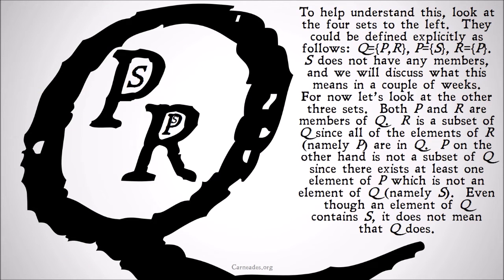To help understand this, look at the four sets to the left, graphically depicted for people that need a different way of understanding this. They can be defined explicitly as follows: Q = {P, R}; P is defined as {S}; R is defined as {P}; and S does not have any members — we'll discuss exactly what that means in a couple of weeks. Both P and R are clearly members of Q, explicitly defined as such. R is a subset of Q since all the elements of R — namely P — are in Q.